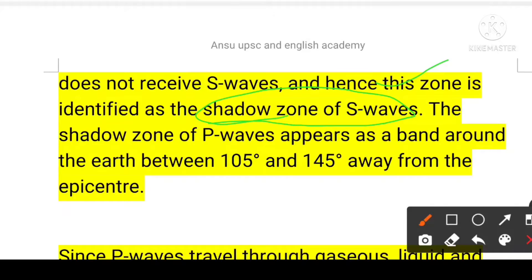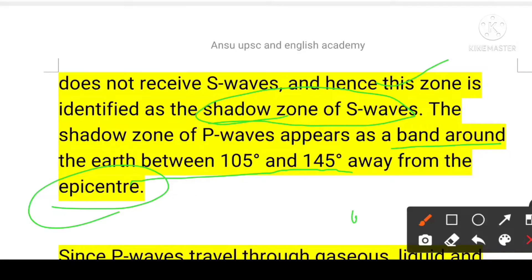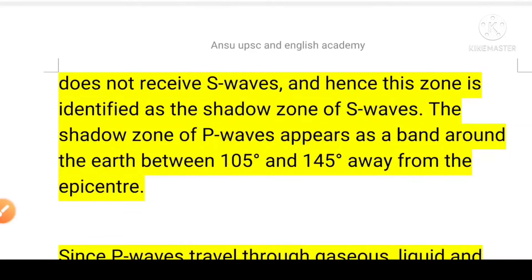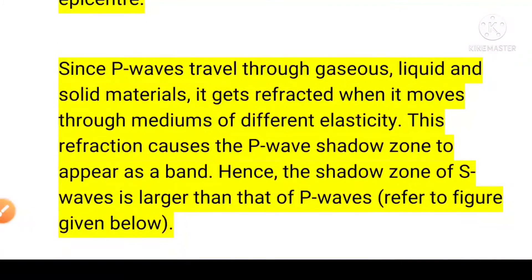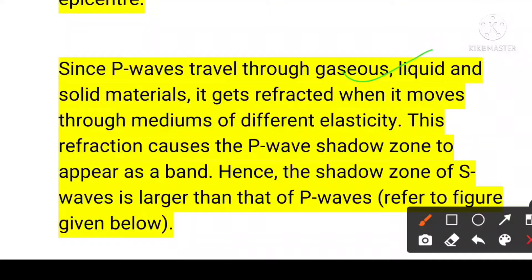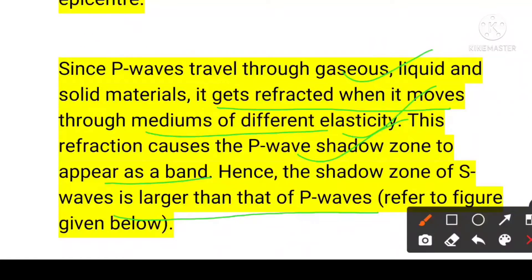The shadow zone of the P-wave appears as a band around the earth between 105 degrees and 145 degrees away from the epicenter. Since P-waves travel through gases, liquid, and solid, they get refracted when moving through the medium. This refraction causes P-wave shadow zones to appear as a band. Hence the shadow zone of the S-wave is larger than the P-wave.